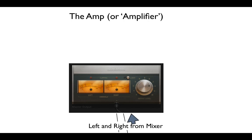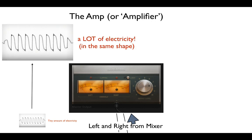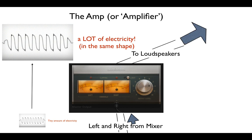The left and right signals coming from the mixer might look something like this. The amplifier takes them and makes them much bigger — it amplifies them. Notice how the two shapes are the same but the second one is bigger. The electrical signal needs to be big and strong because it has to move the loudspeakers to make sound.